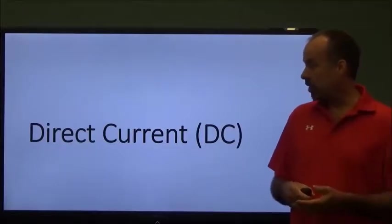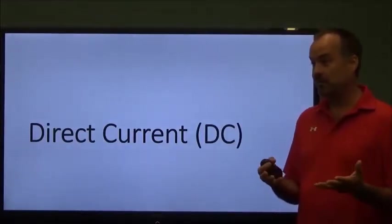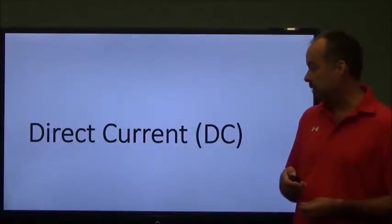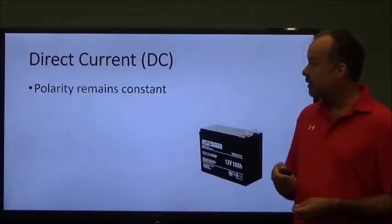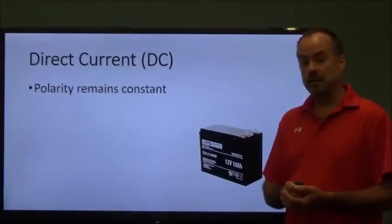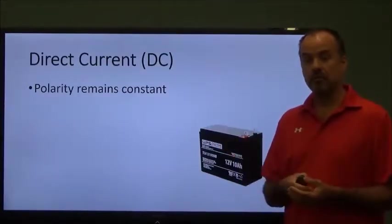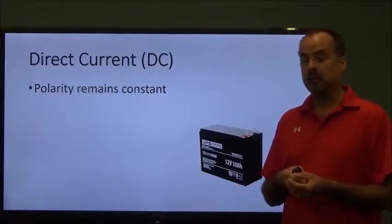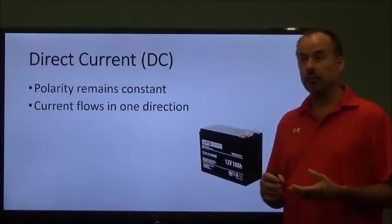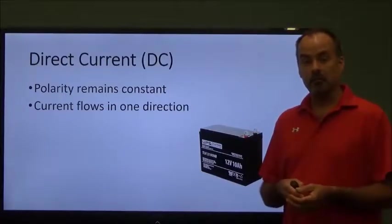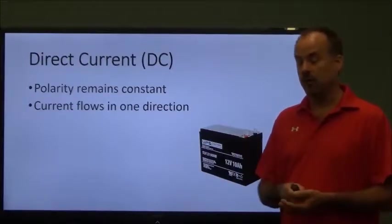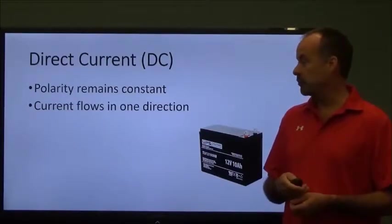To start off, we're going to look at direct current, what is it and how is it different from AC current. With direct current, the polarity of direct current voltage remains the same, meaning that once the circuit is made, the polarity of that circuit never changes. The current flows in one direction only. Once the circuit is made and power is applied and the circuit is closed, that current will only flow in one direction through the conductors and the loads in that circuit.